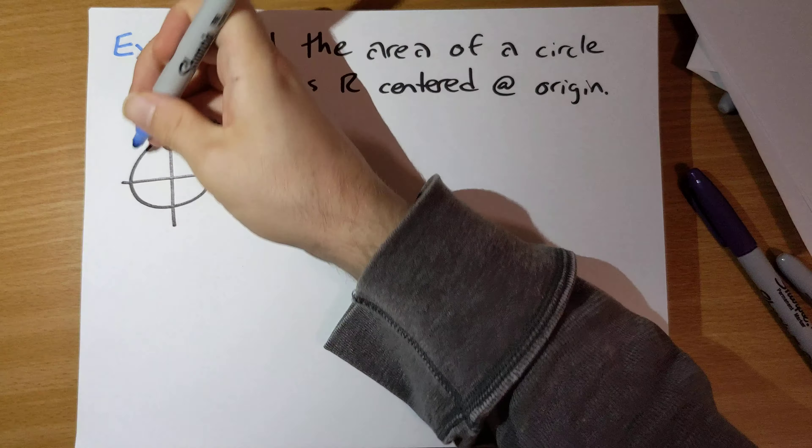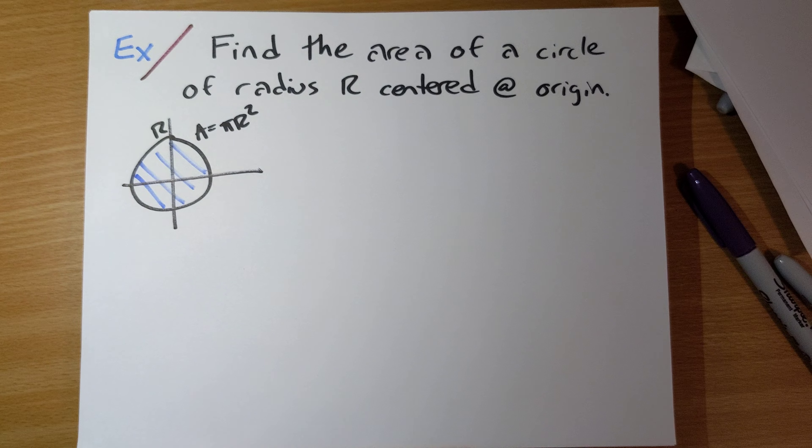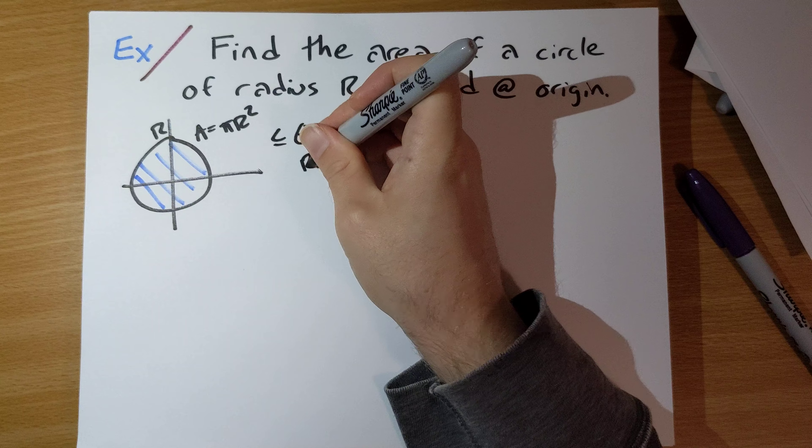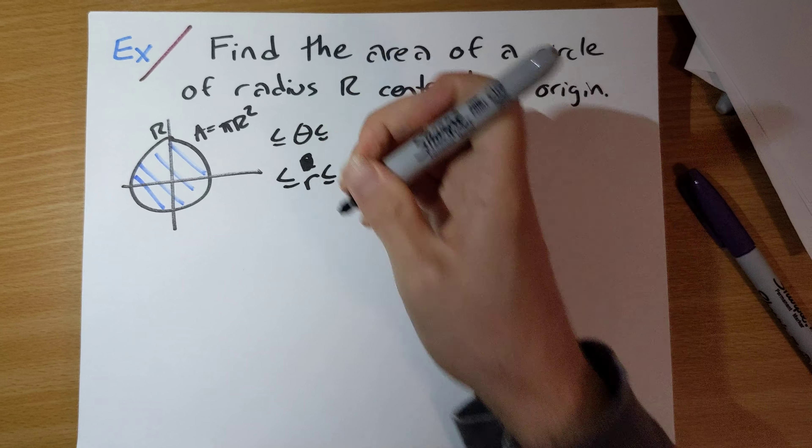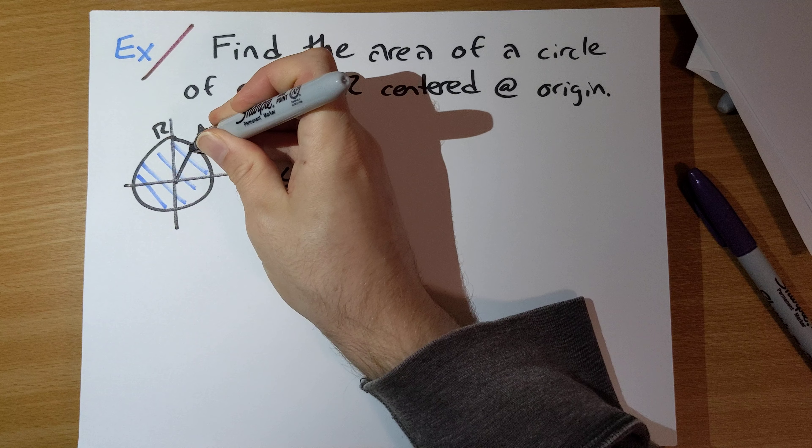For this region, we need bounds on θ and r. Little r here. So little r, the radius can be anything from 0 to big R.